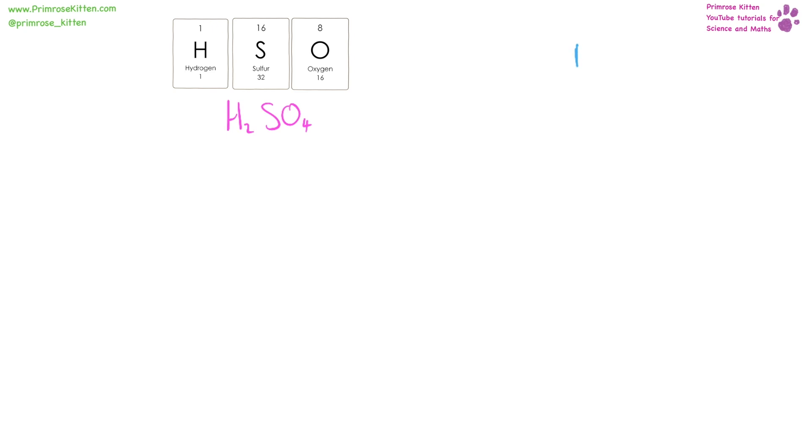When you are working out the MR which is the relative formula mass you need to take all of the ARs which is the relative atomic masses and add them together. Now the mass is the larger number of the two. So Hydrogen has a mass of one and we have two of them. Sulfur has a mass of 32. Oxygen has a mass of 16 and we have four oxygens. So one times two is two plus 32 plus 16 times four which is 64. Add those together we get 98.